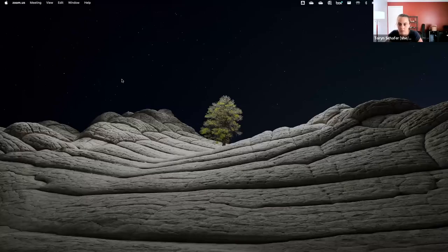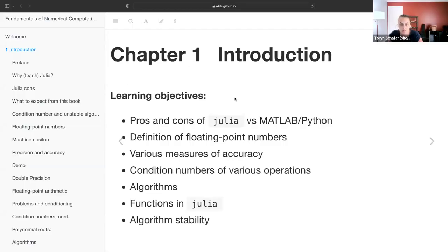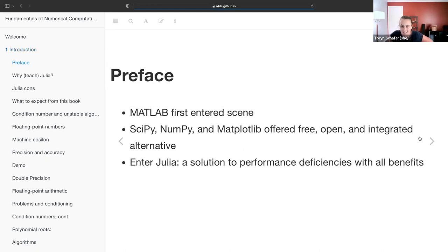All right, I'll share my screen. We're going to talk about just chapter one today, and I also have some stuff from the preface for the Julia version. From the preface, they talk about pros and cons of Julia versus MATLAB. And the content was some mathematical definitions, including floating point numbers, accuracy, condition numbers, algorithms, writing functions in Julia, and measuring algorithm stability. I'm a trained statistician, not a computer scientist. So when we get to some of the definitions, these are actually the first time I've probably seen them.